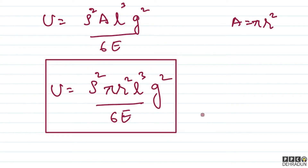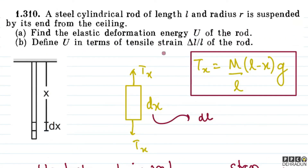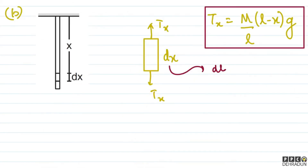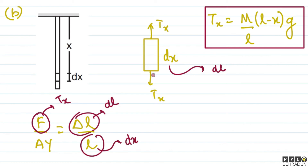For Part 2, we need to express U in terms of tensile strain δL/L. First we need to find δL. Using the basic formula F/(AE) = δL/L for the element dx: here F = Tx, δL corresponds to the elongation dL of element dx, and L in the formula is replaced by dx. With A = πR² and Young's modulus E, we get a relation between dL and dx.